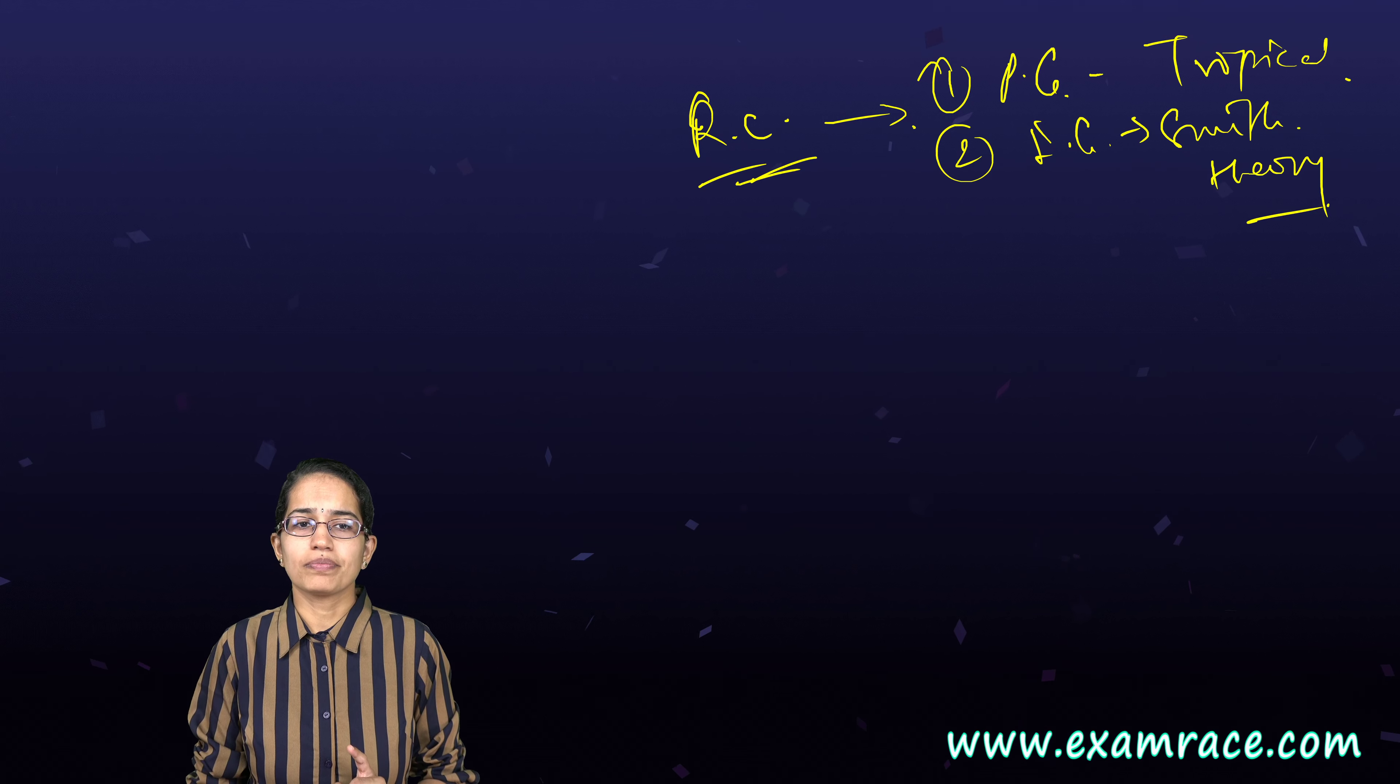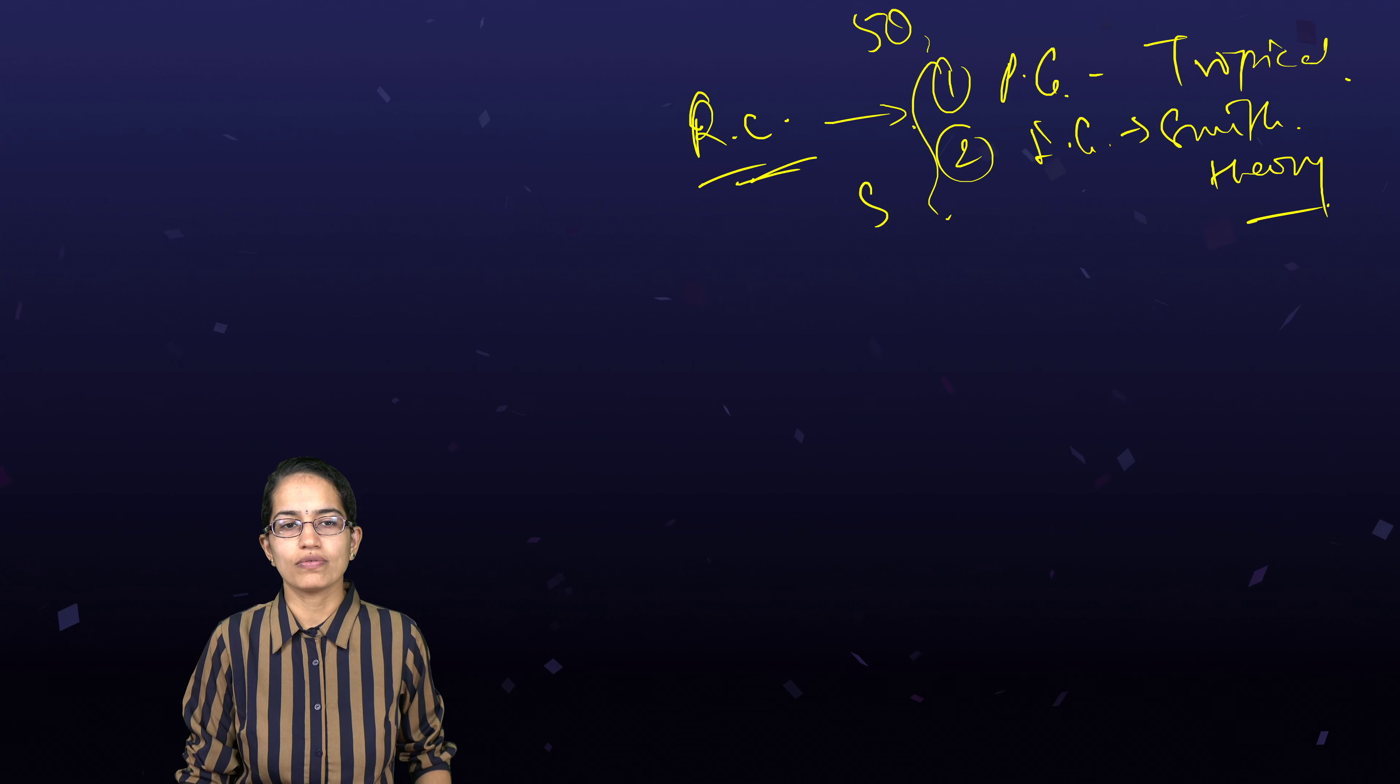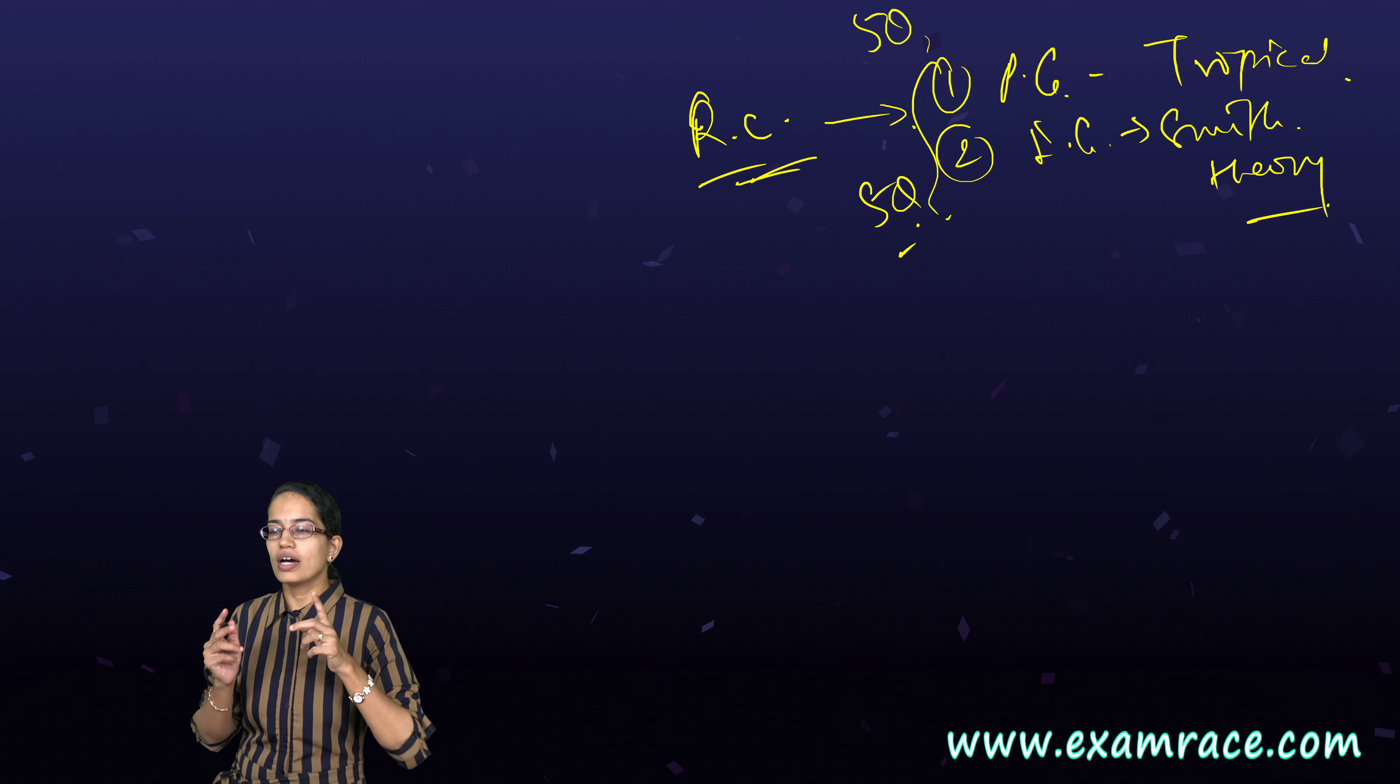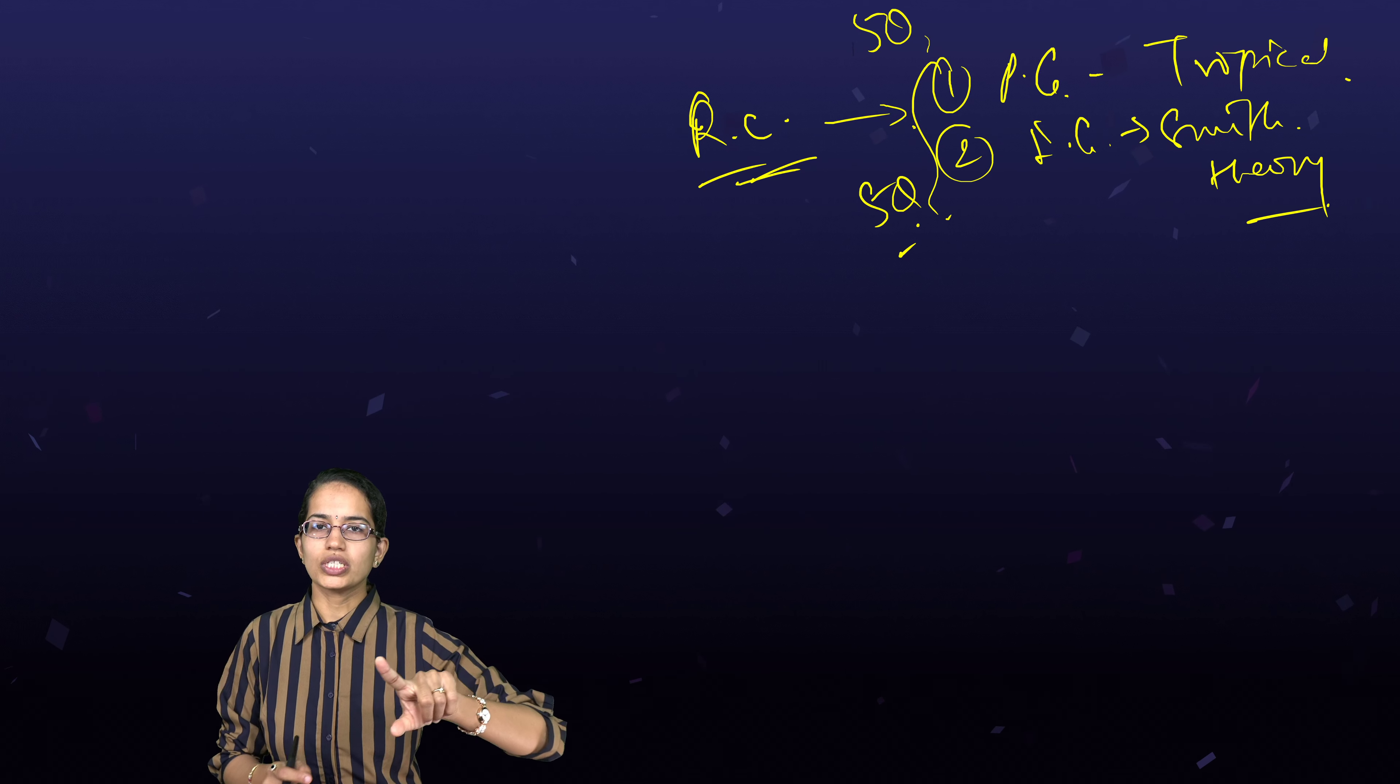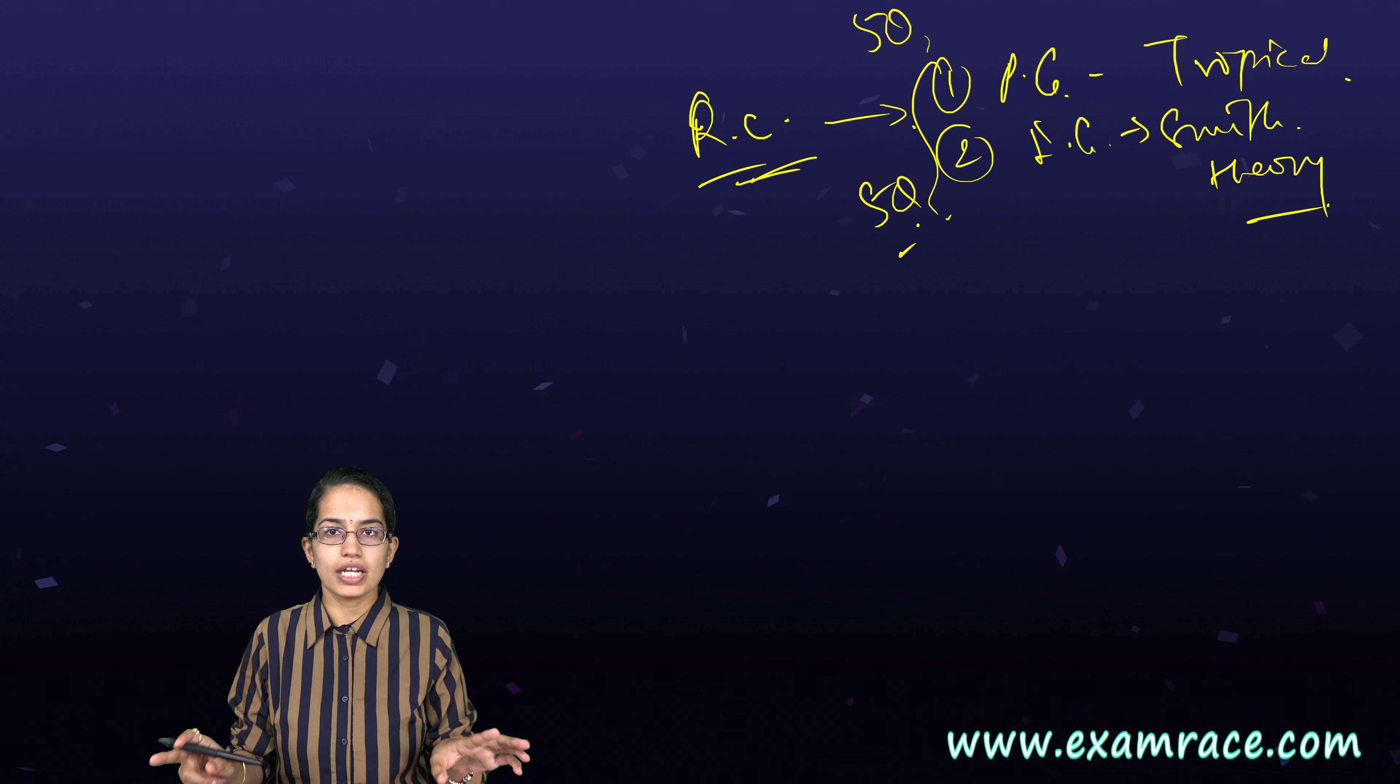The second question was from the industrial geography which talked about Smith's theory. So you had two questions based on reading comprehension and five questions were there on both of these passages. So passage-based questions gaining importance.